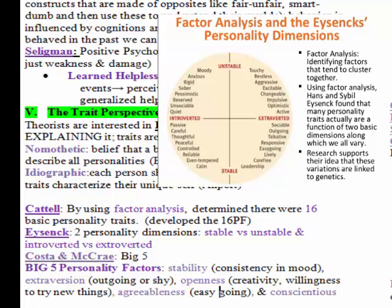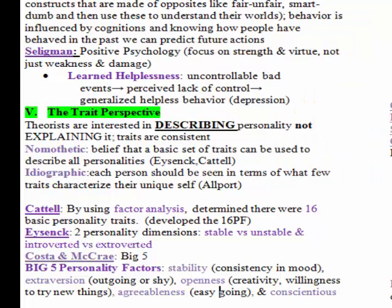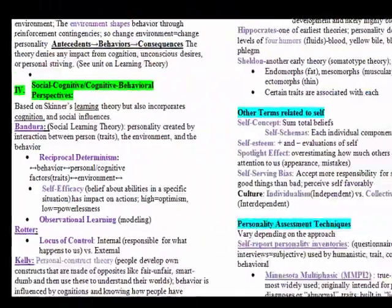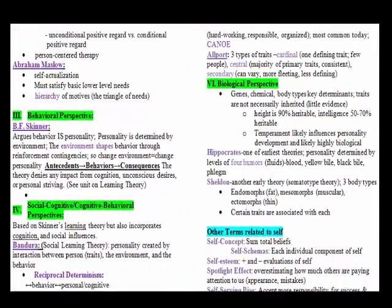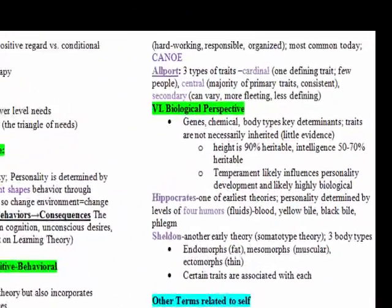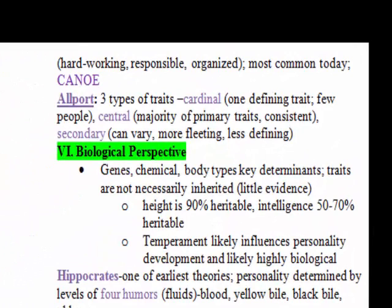Costa and McCrae are important for developing the Big Five personality factors: stability, extroversion, openness, agreeableness, and conscientiousness. One way to remember them is through the acronym CANOE — a first-letter technique.